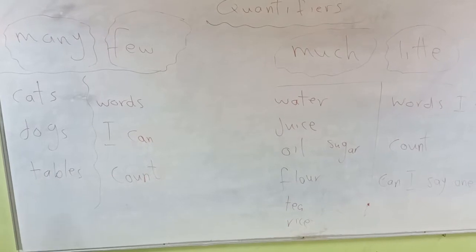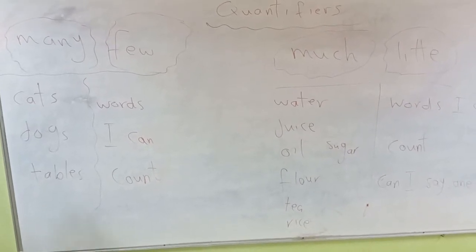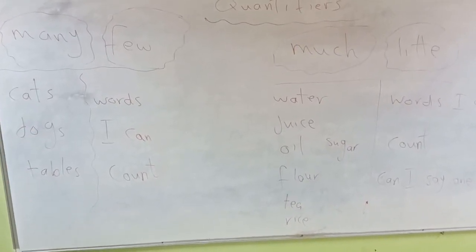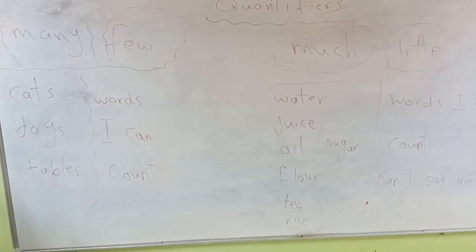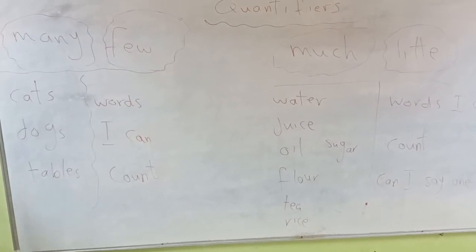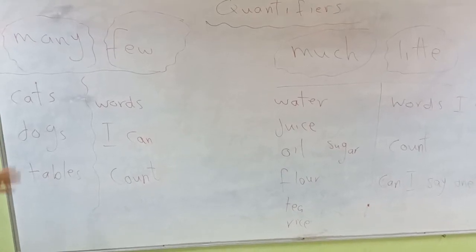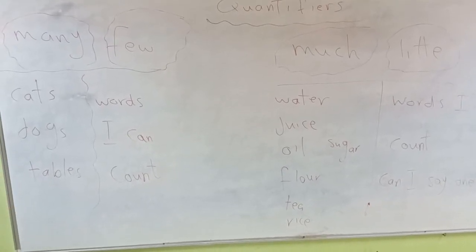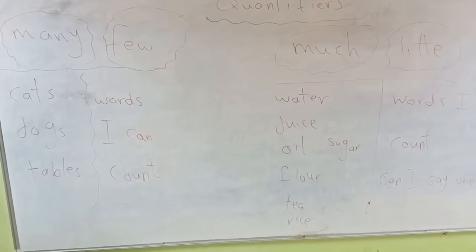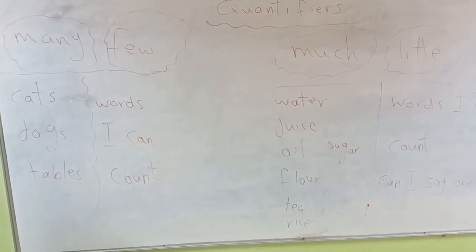Let's start with many and few. I use many and few for things I can count, like cats, dogs, tables, words — countable, plural words with S or a regular plural. For example: I have many cats in my house. I have few cats in my house.